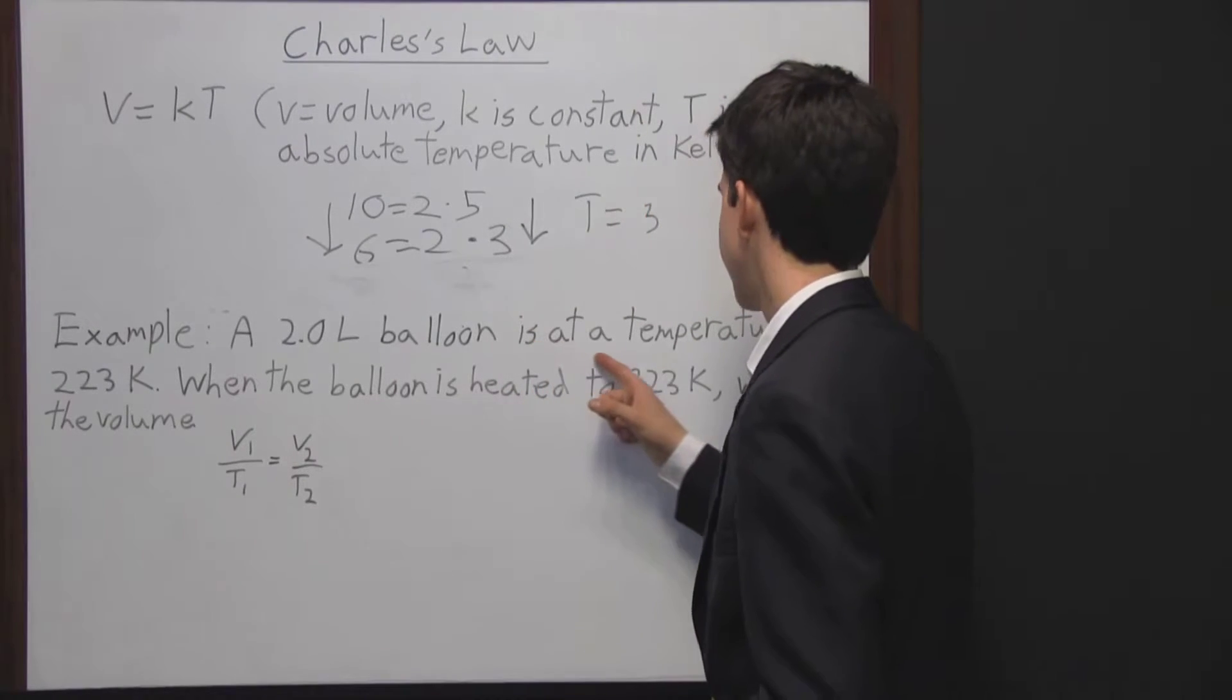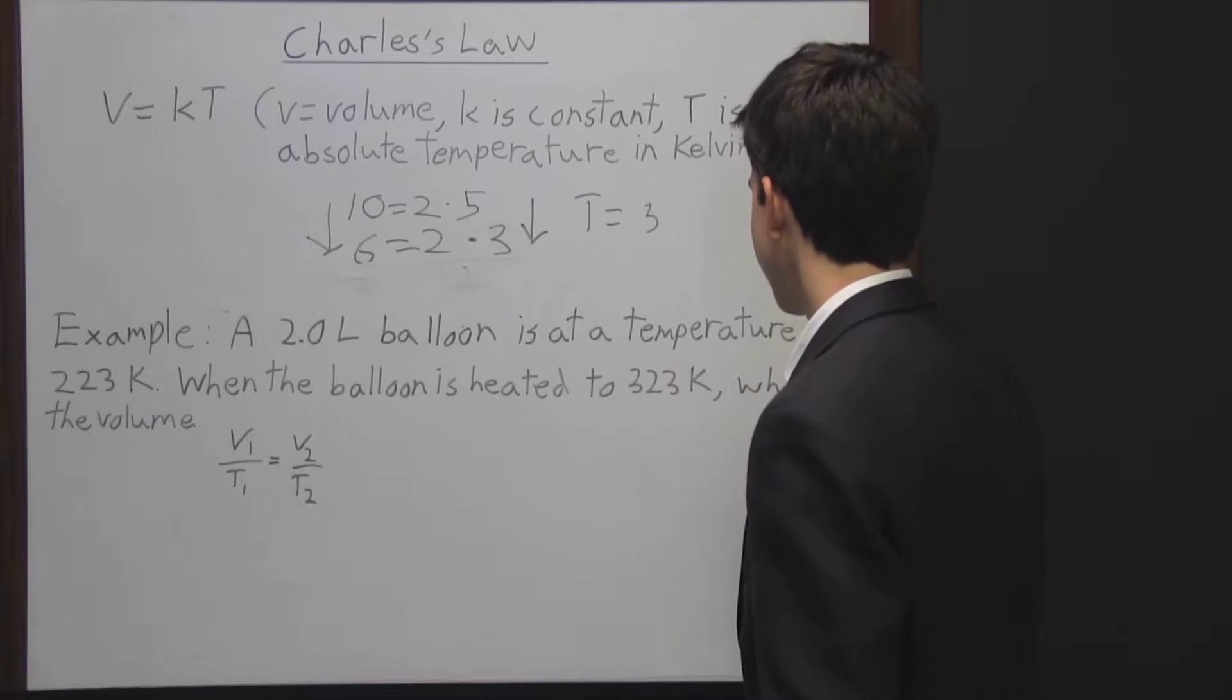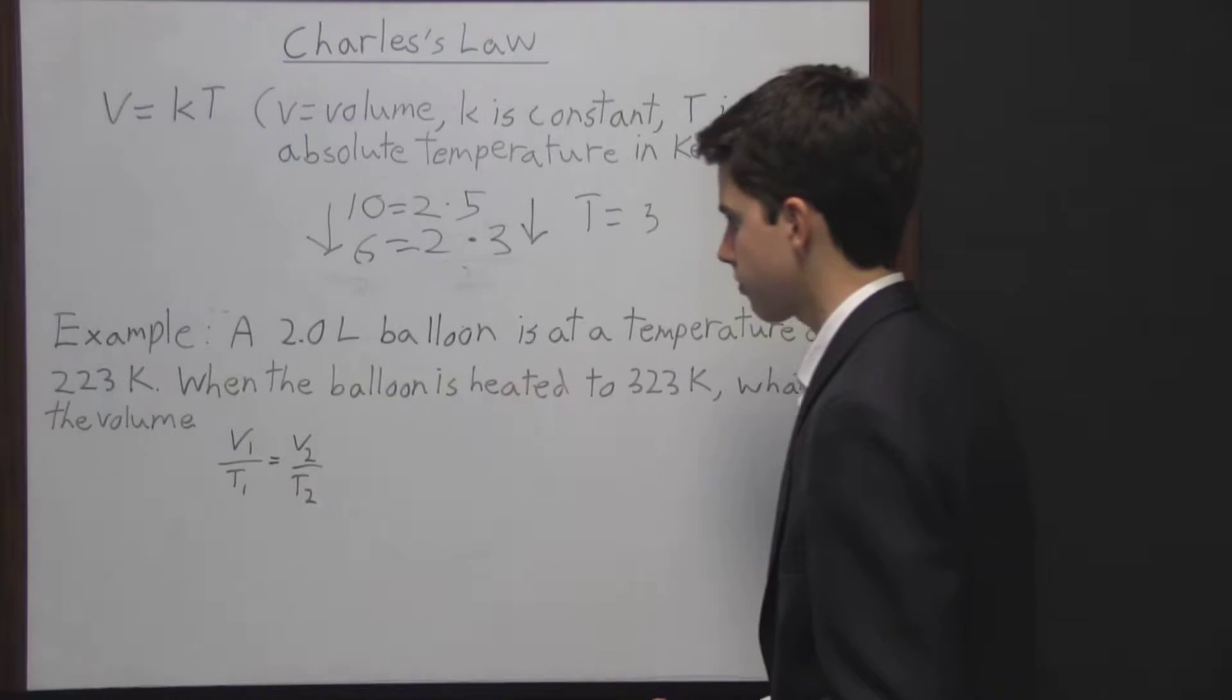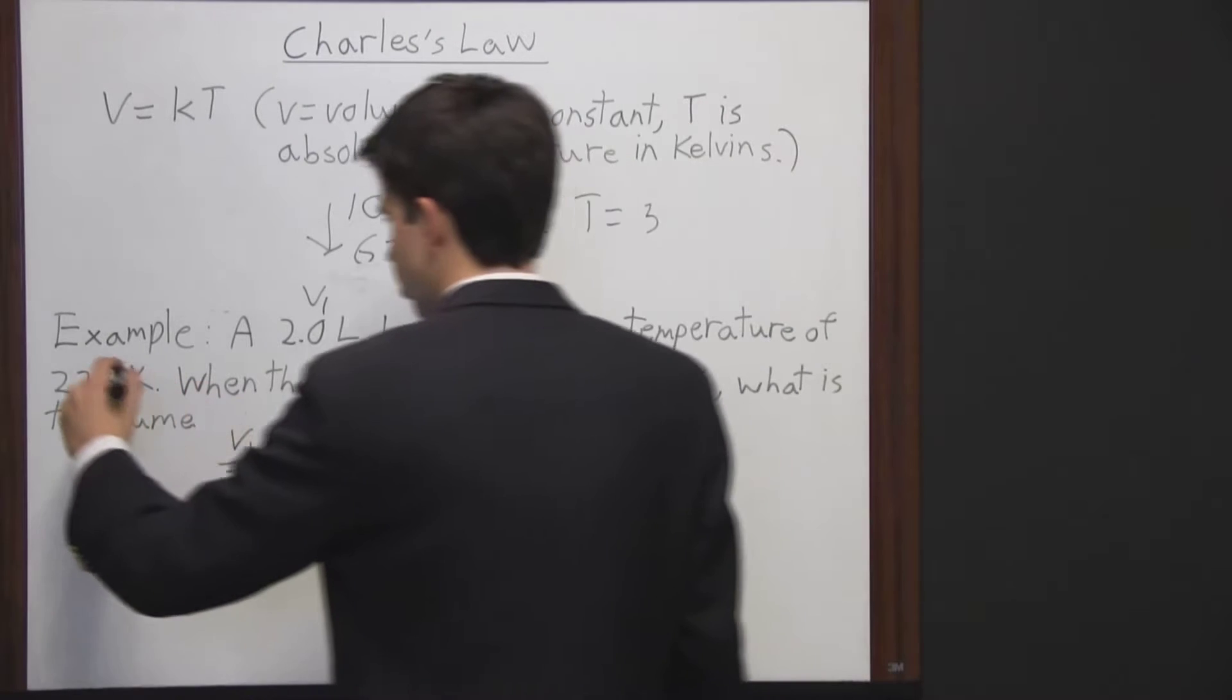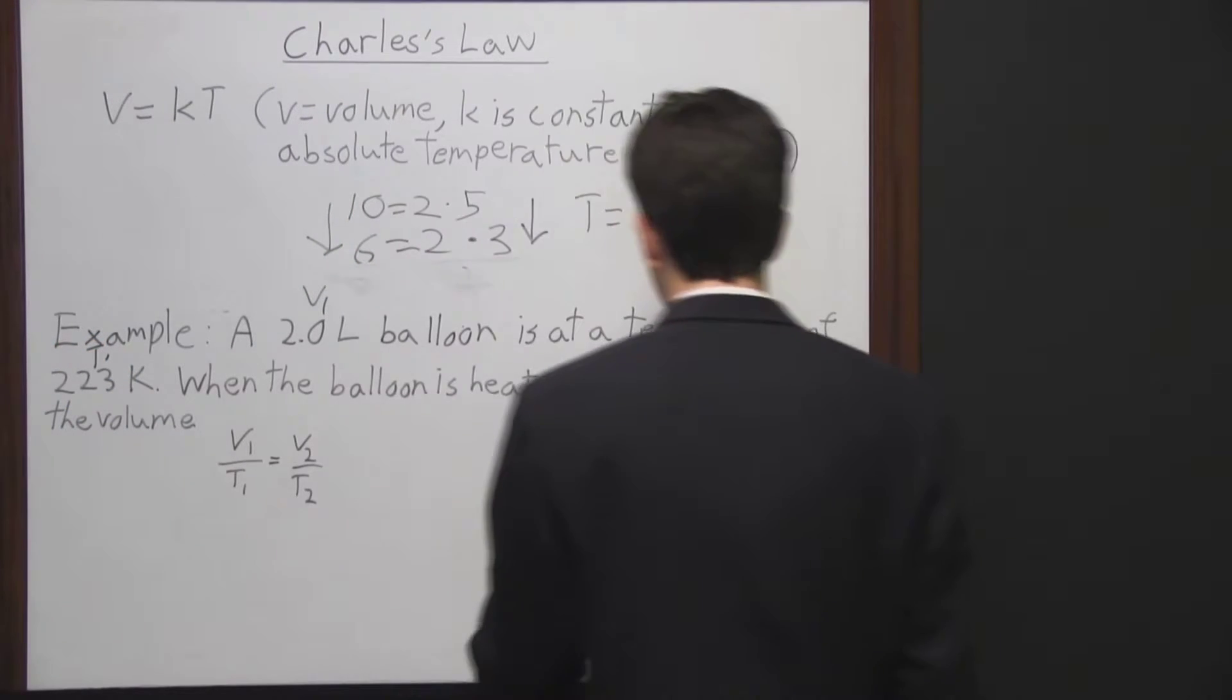Now look at this example problem: A 2.0 liter balloon is at a temperature of 223 Kelvin. When the balloon is heated to 323 Kelvin, what is the volume? So this is the first volume, so that's V1. It's at a temperature of 223, so that's T1. Then the balloon is heated to 323.